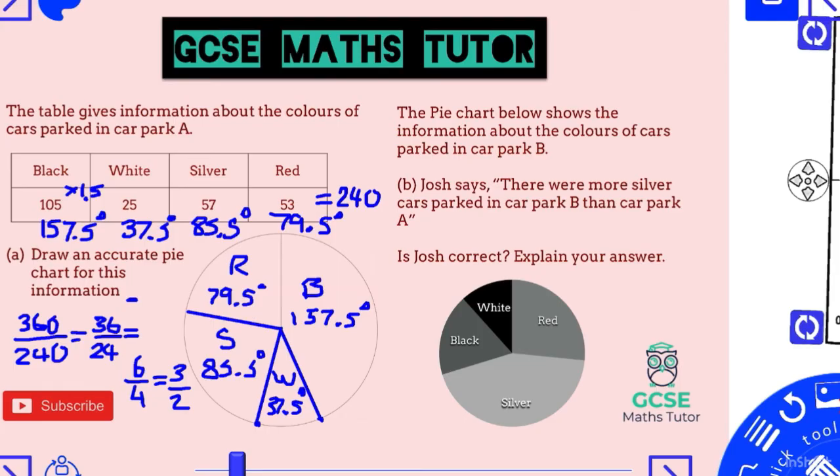That's a harder example than you'd typically face. On a non-calculator paper it's much more likely all values will be whole numbers without 0.5s. But it can happen, so don't worry — just draw as accurately as you can. In most cases you'll get nice whole-number angles.